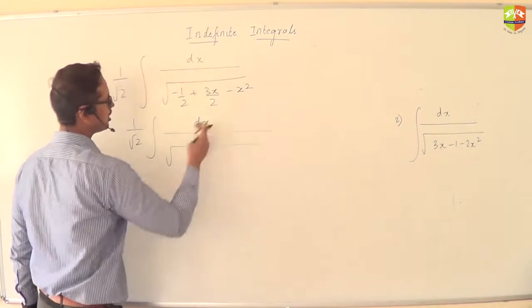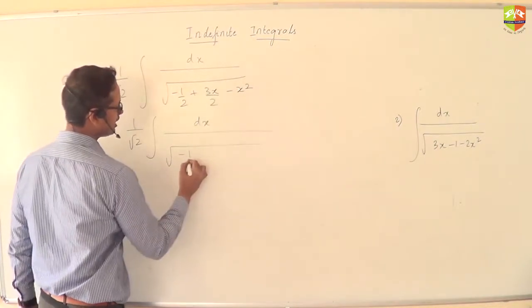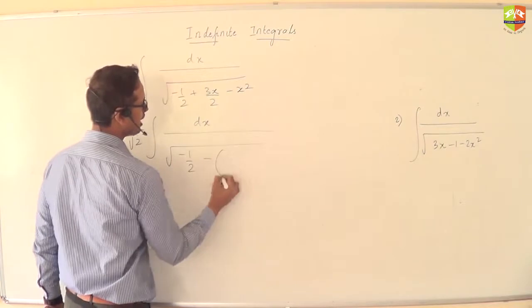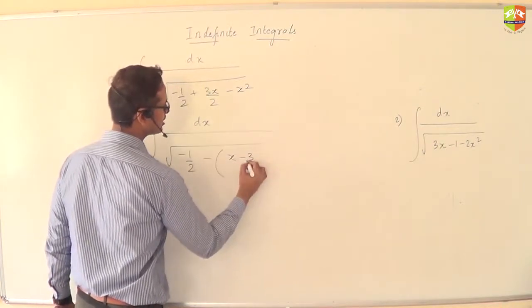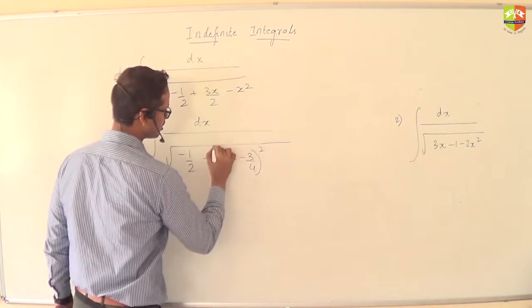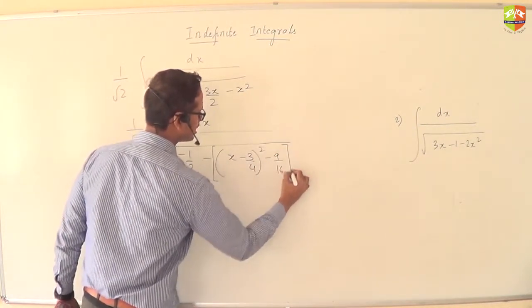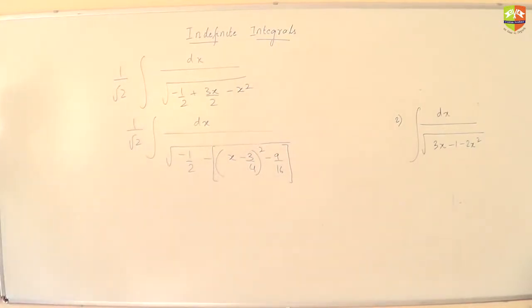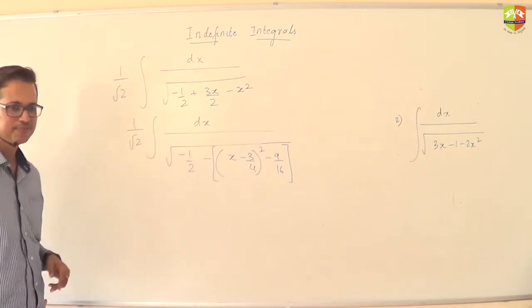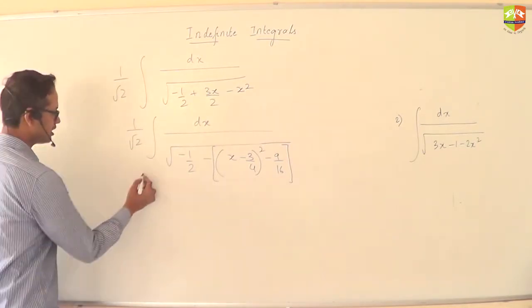So if I solve this problem, I can take a 2 out and write it as 1 by root 2, no issues. Normally we write the 3/8 stuff together, minus half. Now see, this case I can write it as minus half minus x minus 3 by 4 whole square, minus 9 by 16. Can I write it as minus half?